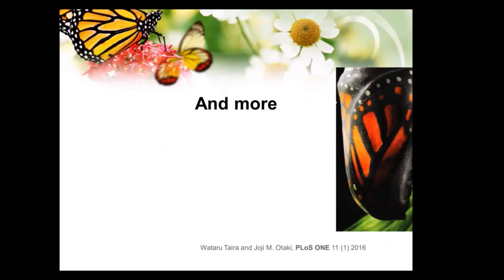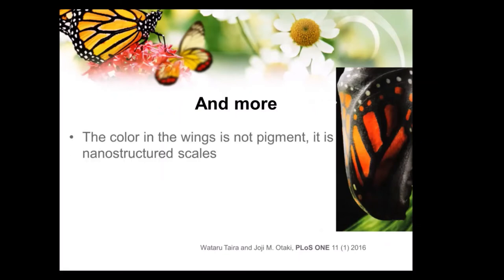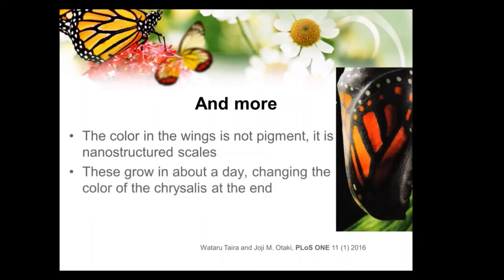But wait, there's still more. The colors in the wing are not a pigment — you don't pour in color somehow. It's grown. They're nanostructured scales. You probably know that technology because we copy that concept and can get televisions based on quantum dot technology — small particles that interact with light so that only a specific color shows. Amazingly, they grow in about a day. The chrysalis of a monarch is greenish until that last day when we now see the colors of the wings through the outside of the chrysalis.